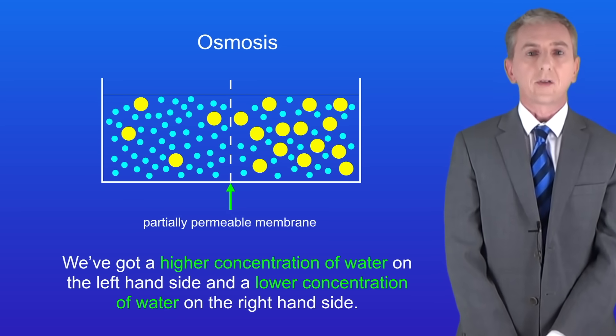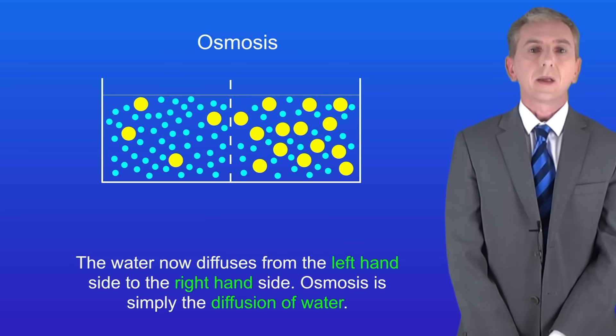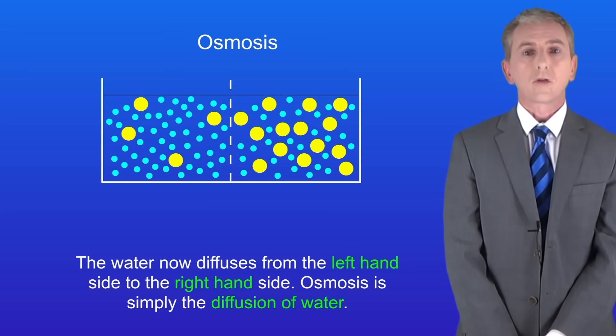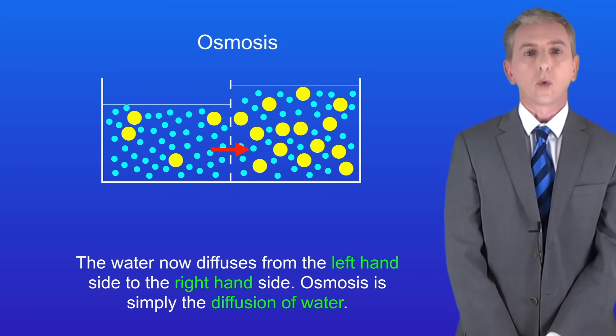So what we've got is a higher concentration of water on the left hand side and a lower concentration of water on the right hand side. That means that the water now diffuses from the left hand side to the right hand side like this. So osmosis is simply the diffusion of water.